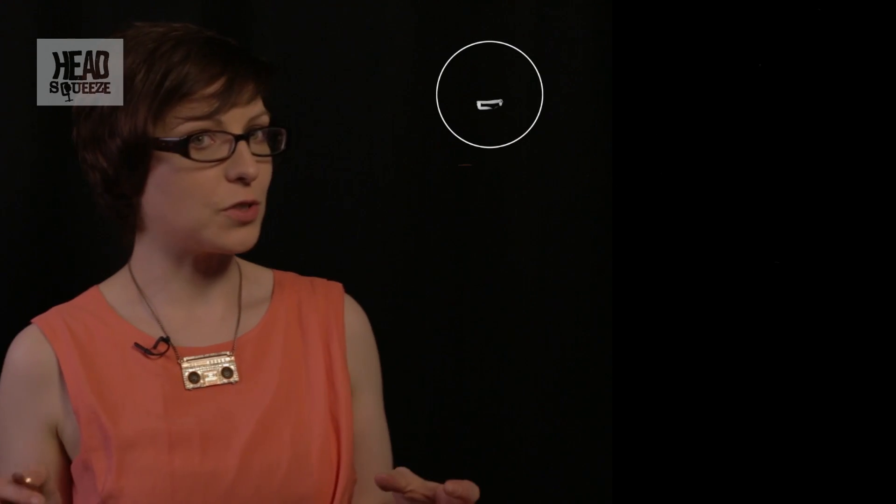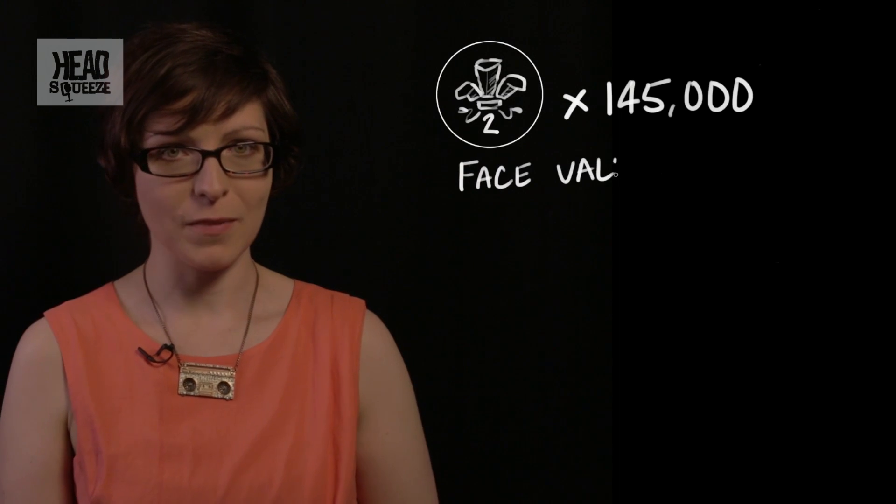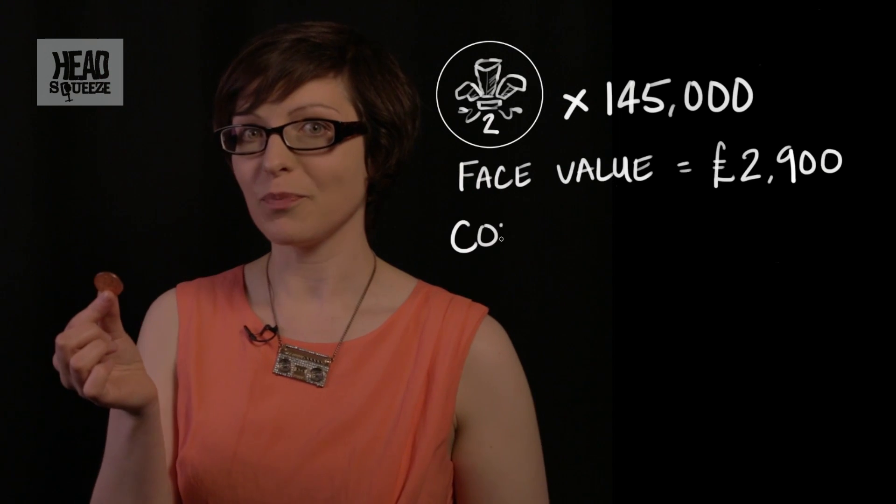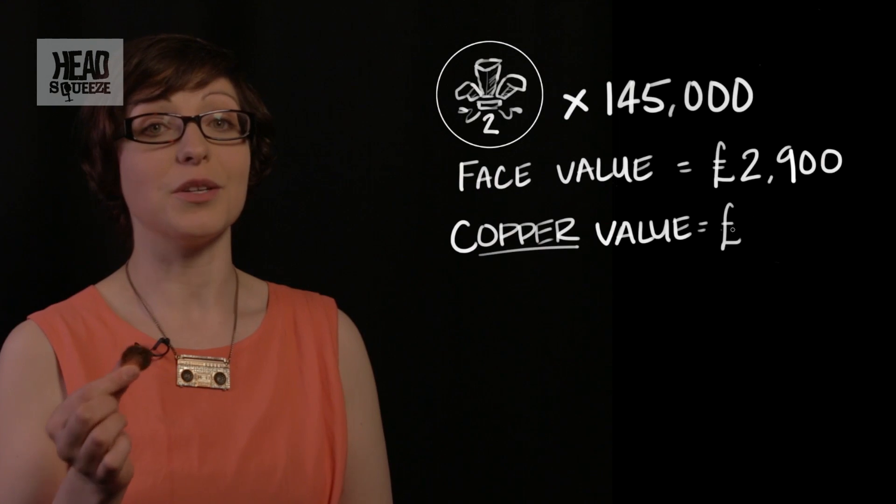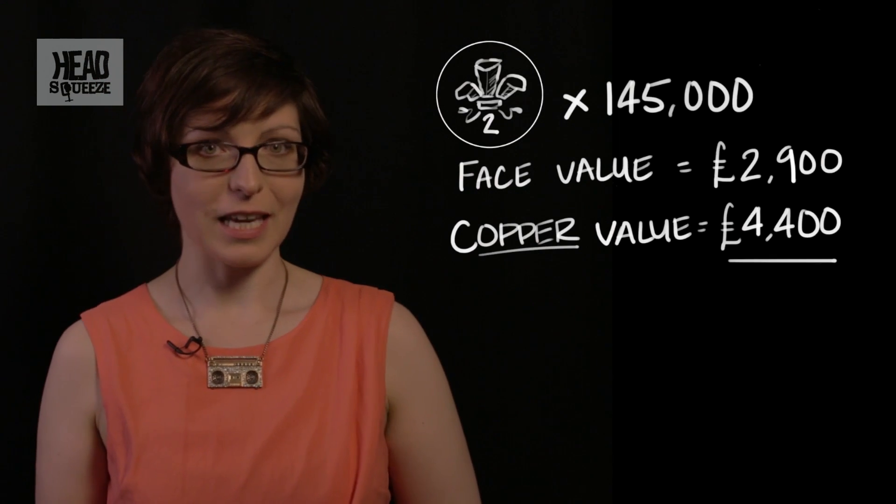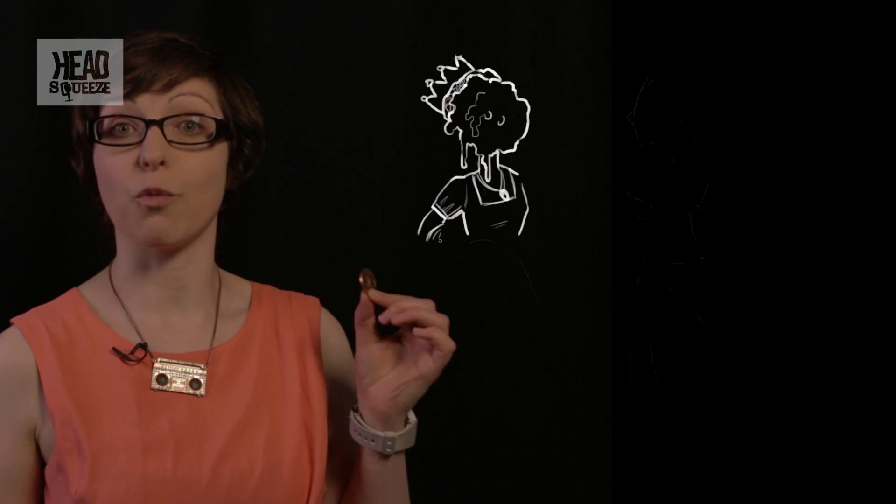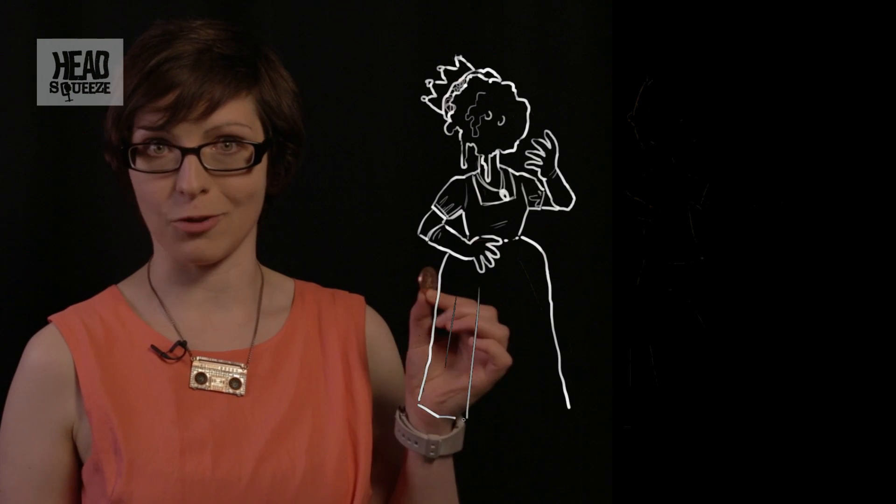But what does this mean for the coin in your pocket? Well, if you had a tonne of these old two pence coins, that's 145,000 of them, they would have a face value of two thousand nine hundred pounds. But the copper inside them is worth four thousand four hundred pounds. If you wanted to trade them in to a scrap metal merchant you'd make a nice tidy profit of one thousand five hundred pounds.